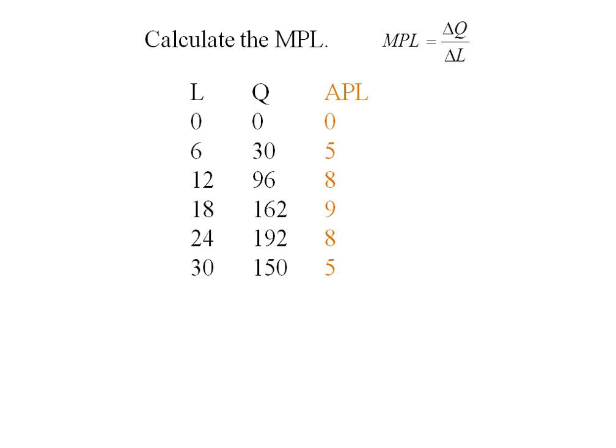Adding a column to my table. The marginal product of labor when output is 0 always starts with a dash. If output is positive, it won't necessarily start with a dash. Now the numerator will be 30 minus 0, or 30. The denominator will be 6 minus 0, or 6, giving me a marginal product of labor of 5.